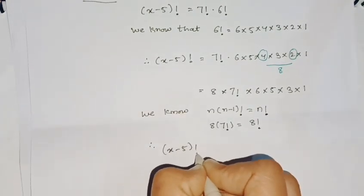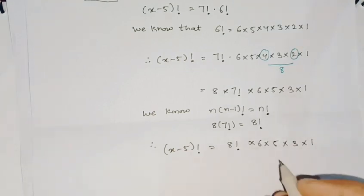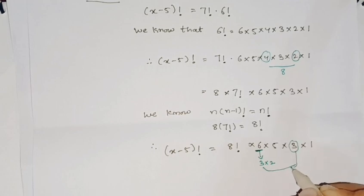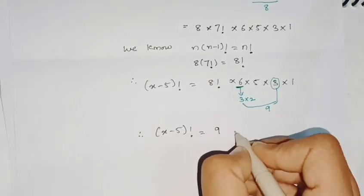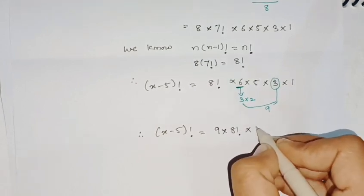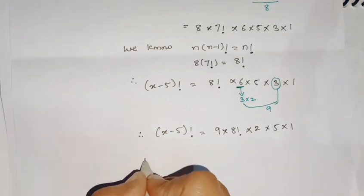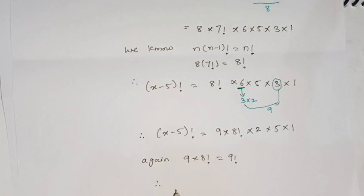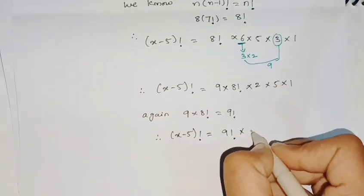So now this becomes (x-5)! = 8! × (6 × 5 × 3 × 1). Now 6 can be written as 3 × 2, so we write 3 × 2, and multiplying 3 × 3 gives 9. So we can write (x-5)! = 9 × 8! × (2 × 5 × 1). Similarly, 9 × 8! = 9!, so this becomes (x-5)! = 9! × (2 × 5 × 1).